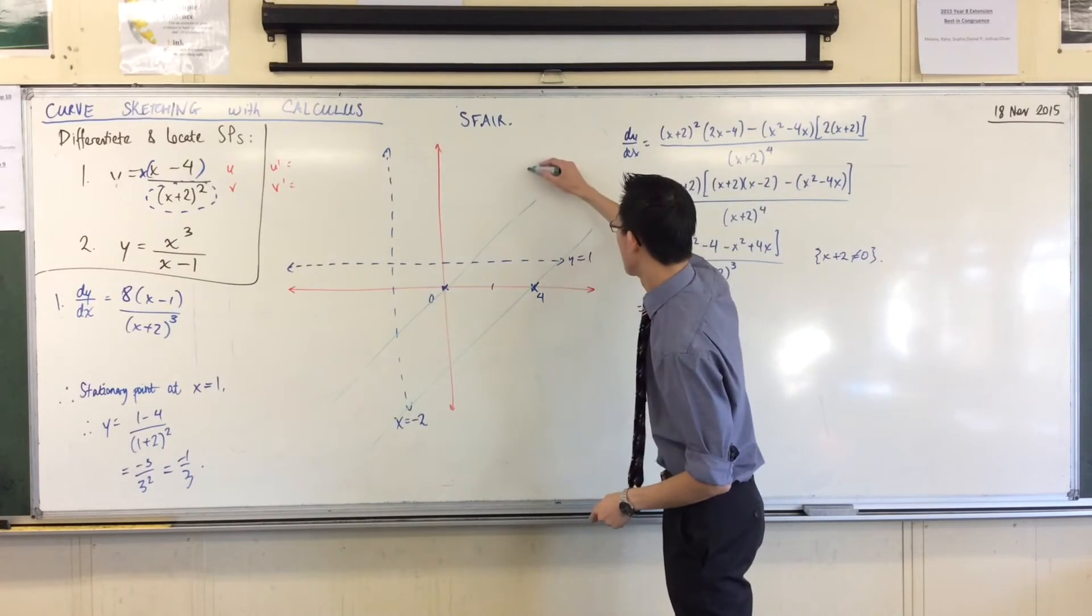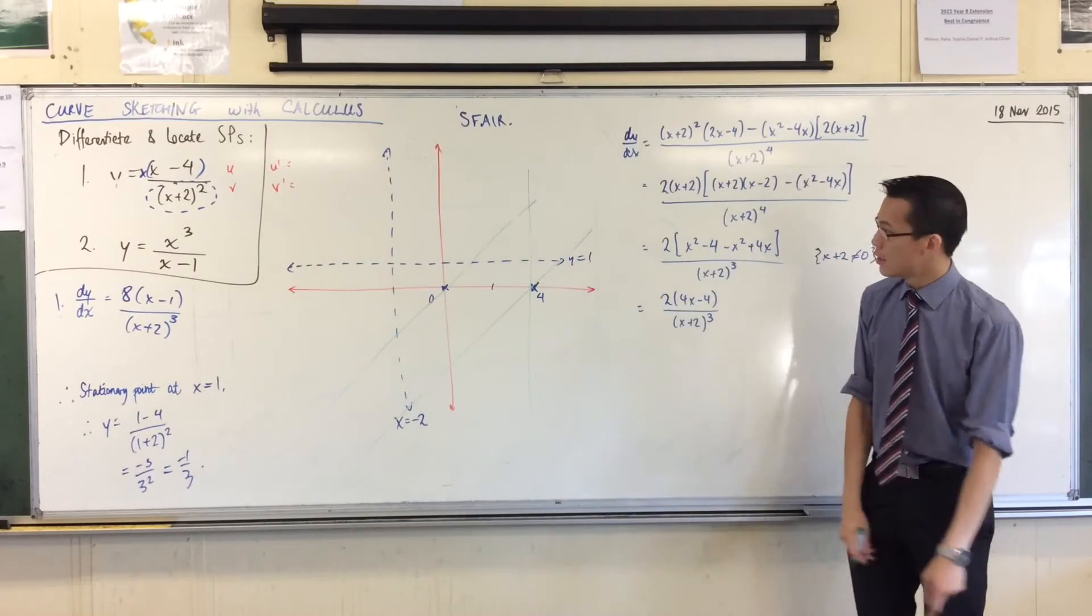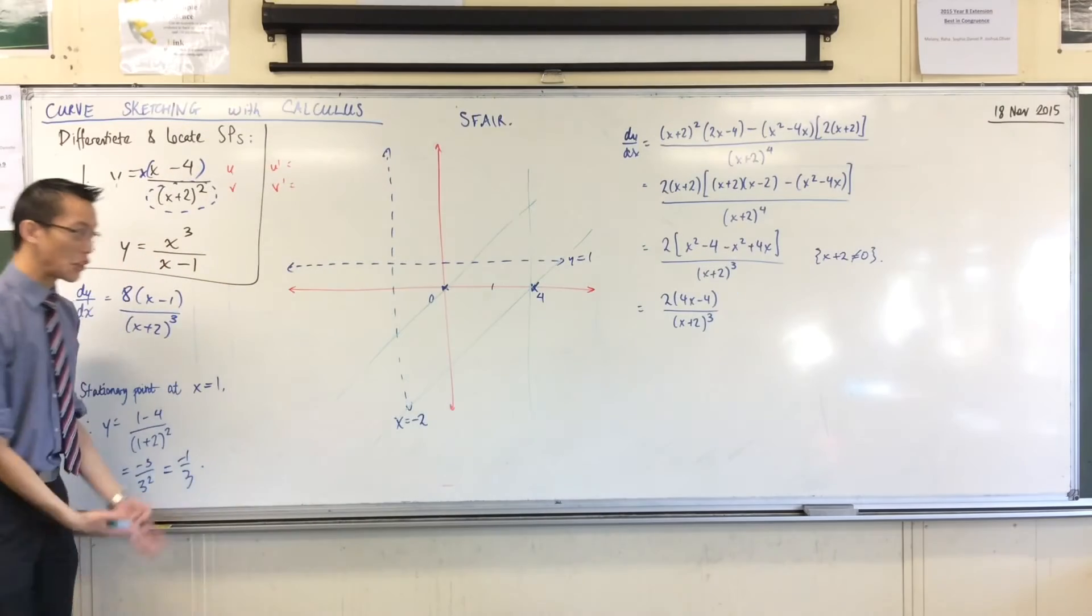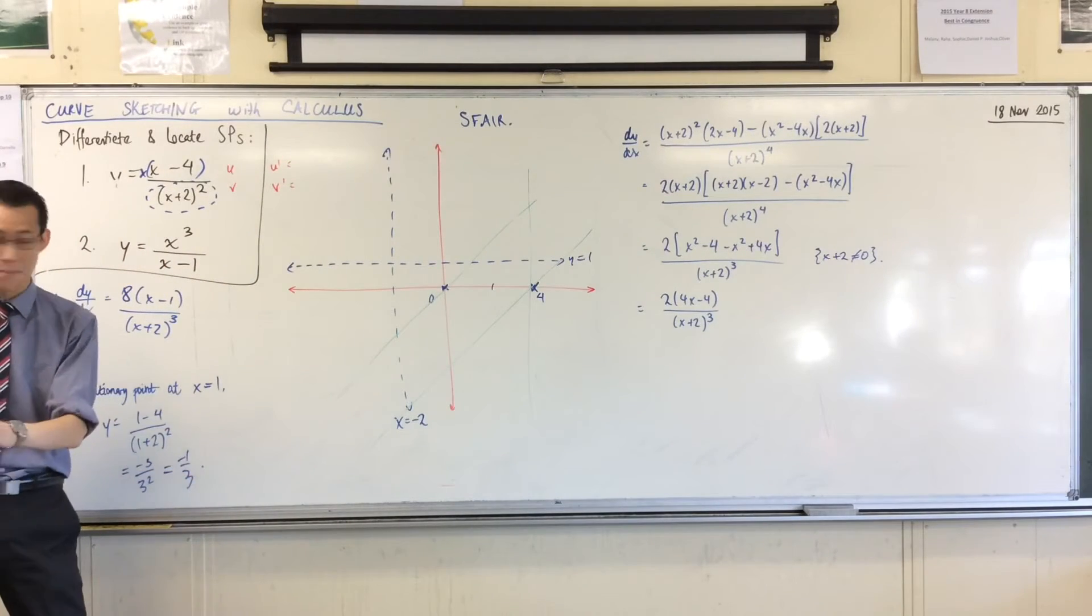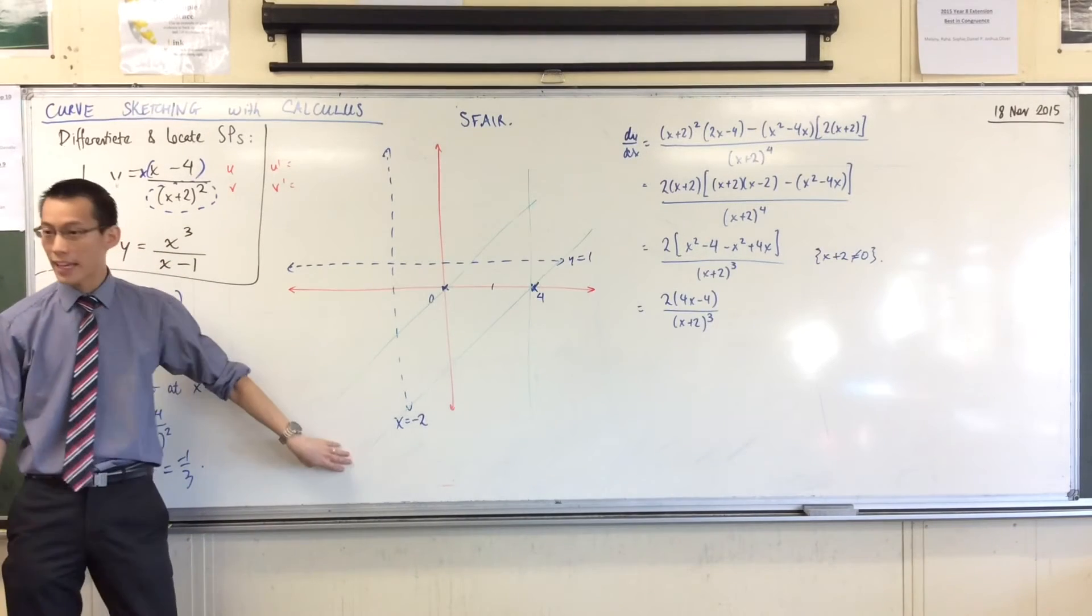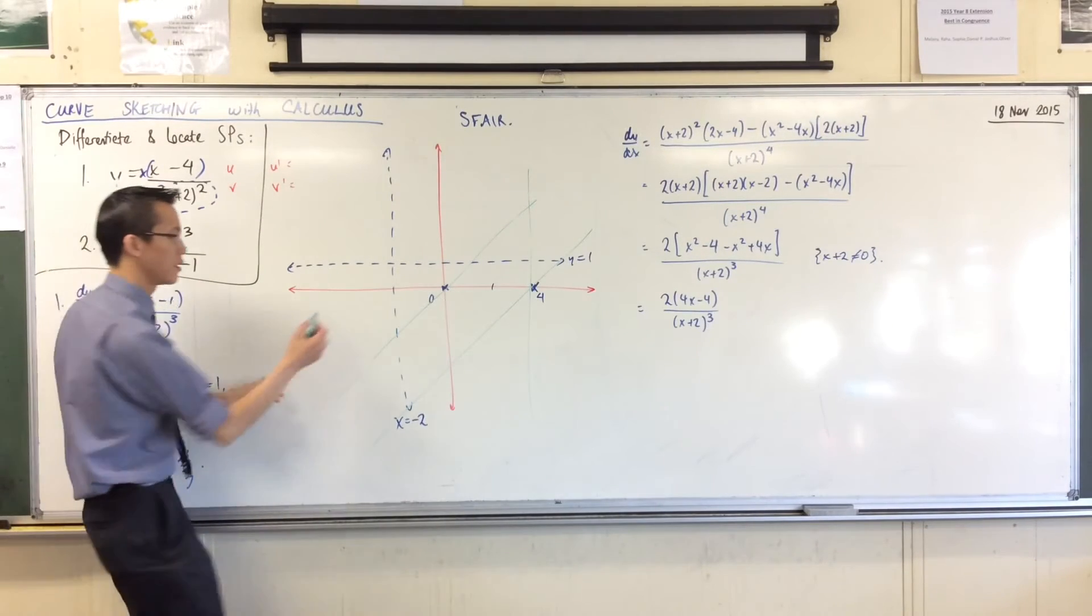And just to help me draw my regions nicely, I'm going to put a vertical line through 4 so that I can shade properly, right? And now I'm ready to shade. And we have two factor lines that I need to worry about, even though I've got two extra ones, but they don't contribute anything. So two negatives gives me a positive, so I'm up here.